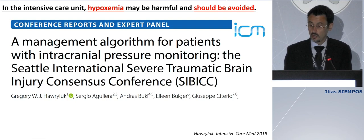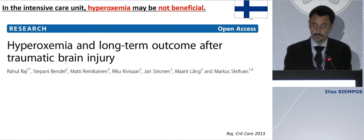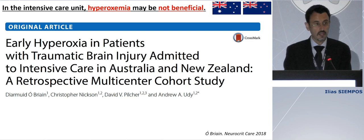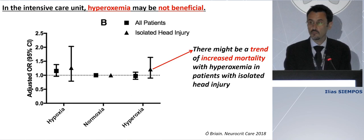In that CIVIC report, published in Intensive Care Medicine three years ago, it was stated that clinicians should maintain an SpO2 above 93%. But what about hyperoxemia? According to a large observational study conducted in Finland, hyperoxemia in the first 24 hours of ICU admission is not predictive of six-month mortality. These results were confirmed in another observational study conducted in Australia and New Zealand, which found that hyperoxemia may not be beneficial — and there might even be a trend of increased mortality with hyperoxemia in patients with isolated head injury.